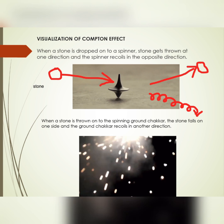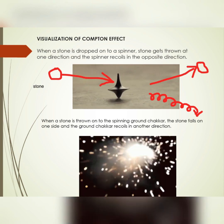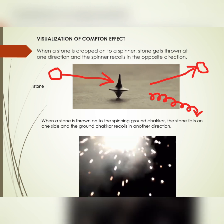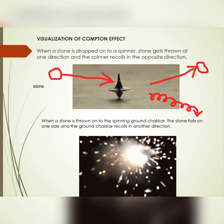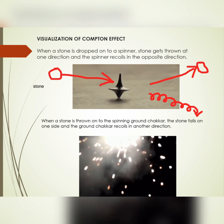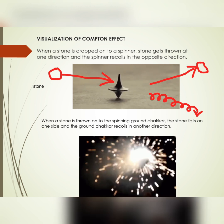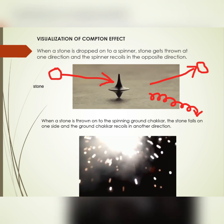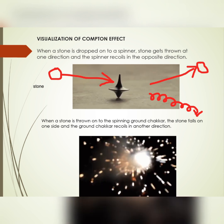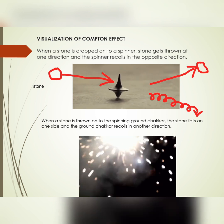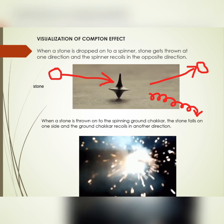This is the visualization of the Compton effect. When a stone is dropped onto a spinner, the stone gets thrown in one direction and the spinner recoils in the opposite direction. When a stone is thrown onto a spinning ground chakkar, the same thing happens. This is only for visualizing the Compton effect.